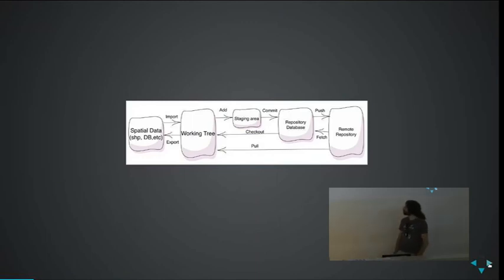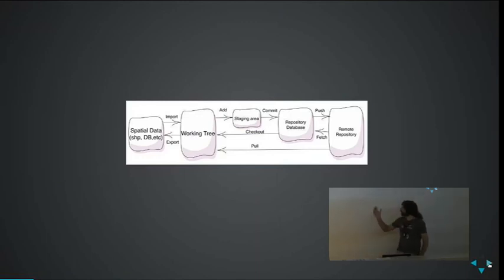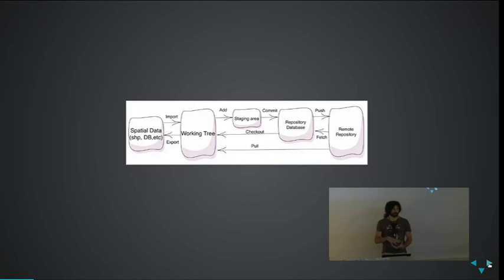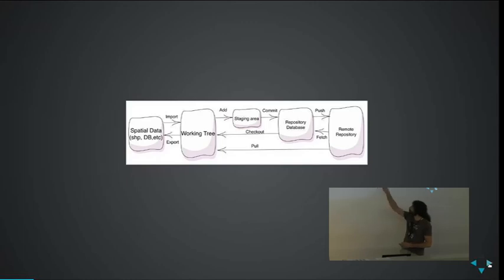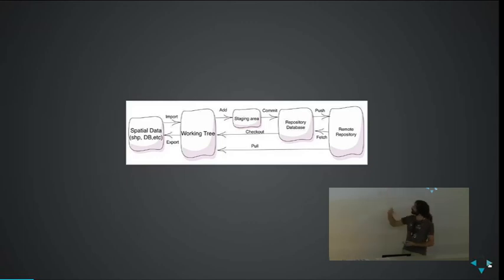We try to move the same ideas to geospatial data. You have your data in any format you want — a spatial database, shapefiles, OpenStreetMap data. You put it into the repository as the working tree, and that is where the versioning starts. That allows GeoGit to compare your data and see what has changed. What you do is move data until you get to the repository database, which is where you create new snapshots. GeoGit sees what has changed and moves that up to create a new version. When you create versions in your repo and have your history, you can move it to other repos and share your data.